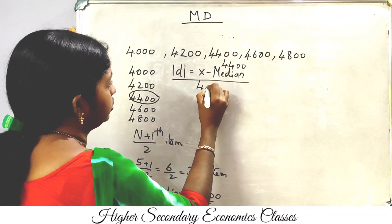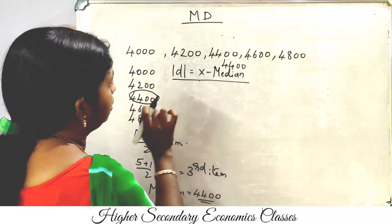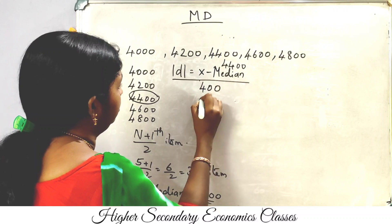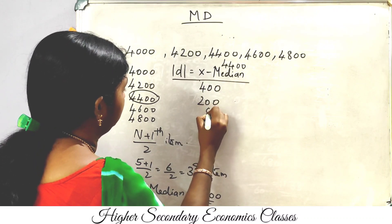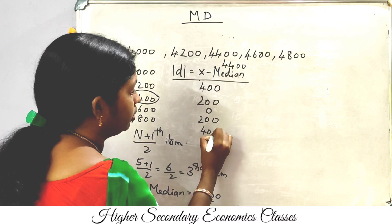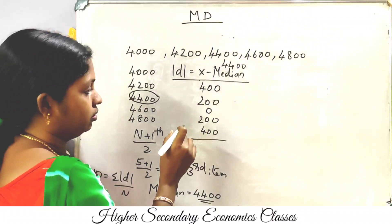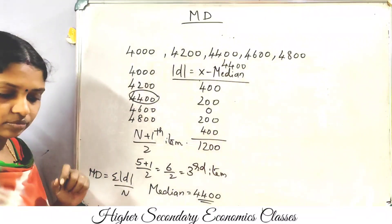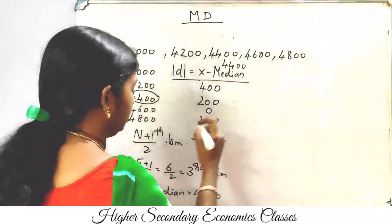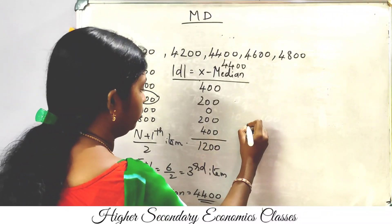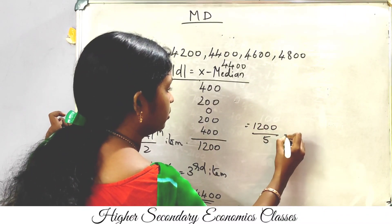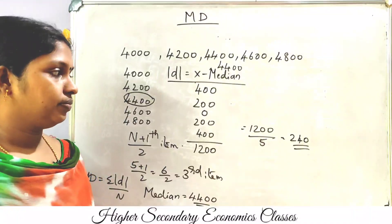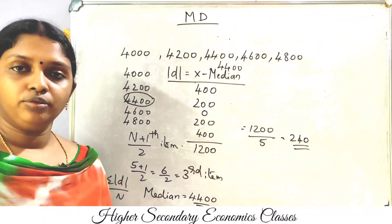Now with the median at 4400, we calculate modulus d values: 400, 200, 0, 200, 400. The total sigma modulus d equals 1200. Mean deviation equals sigma modulus d by n, which is 1200 by 5, giving mean deviation equal to 240.